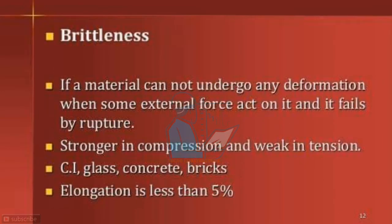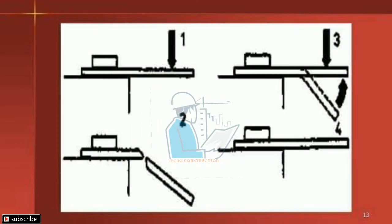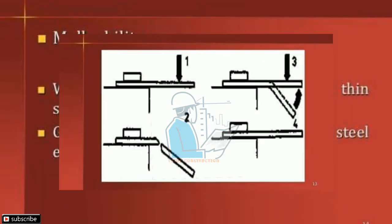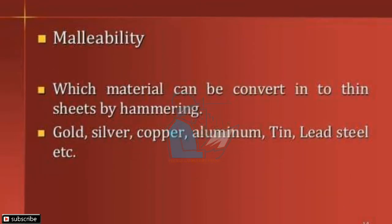Brittleness: if a material cannot undergo any deformation when some external force acts on it and it fails by rupture, it is brittle. Brittle materials are stronger in compression and weak in tension. Cast iron, glass, concrete, and bricks are some examples. Elongation is less than five percent. Malleability: the property by which a metal can be converted into thin sheets by hammering. For example, aluminum sheets are produced by this process.